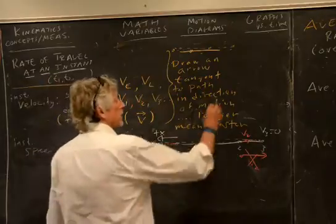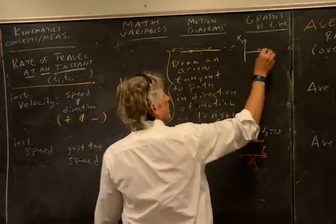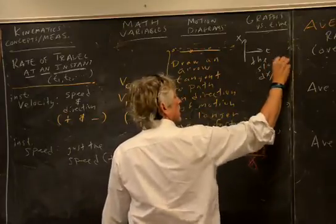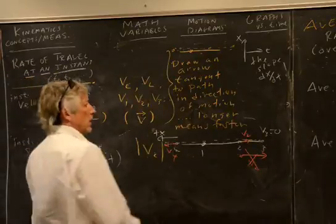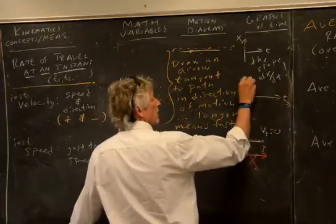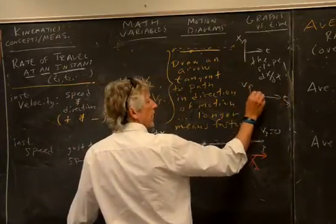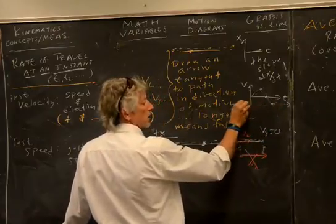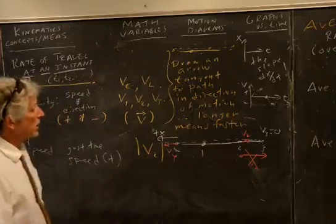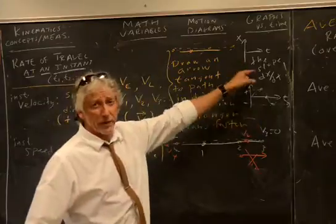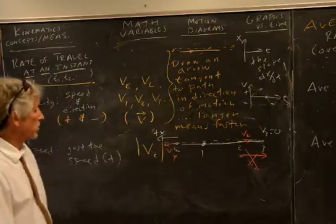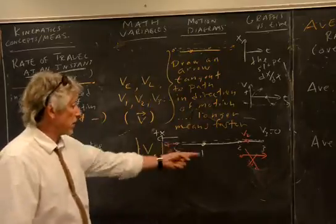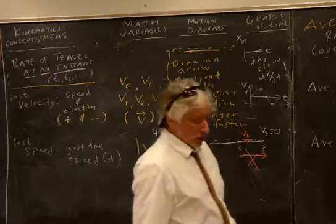On graphs: for x versus t, the velocity is the slope — dx/dt. On a v versus t graph, it's the value at that point. Here I have a zero velocity; here I have a negative velocity. We can represent velocity algebraically in equations and graphically. The speed is just how fast, independent of the plus or minus sign.